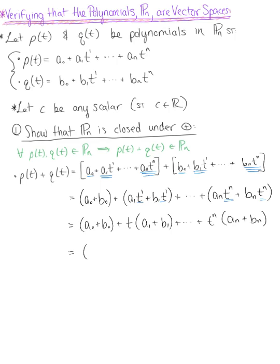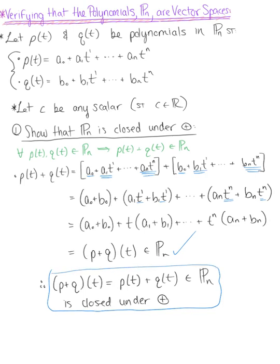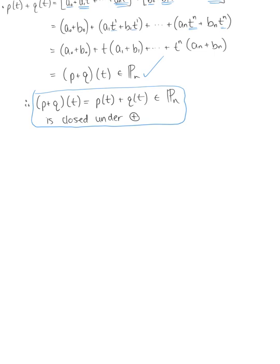We've rewritten this as the polynomial p plus q of t, which is a polynomial, so it exists in P sub n. Therefore, p plus q of t — which equals p of t plus q of t — is in the set of all polynomials, and P sub n is closed under addition. Because this first axiom holds true, all other addition axioms also hold true. The next thing we want to show is that this is also closed under scalar multiplication — that P sub n is closed under scalar multiplication.